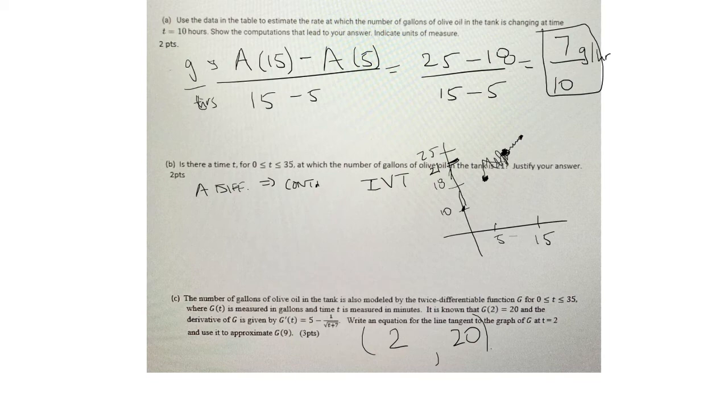The slope is going to be the derivative. So I need to plug in 2 in the derivative. So that would be 5 minus 1 over 2 plus 7, which is 5 minus 1 over root of 9, which is 5 minus 1 third.